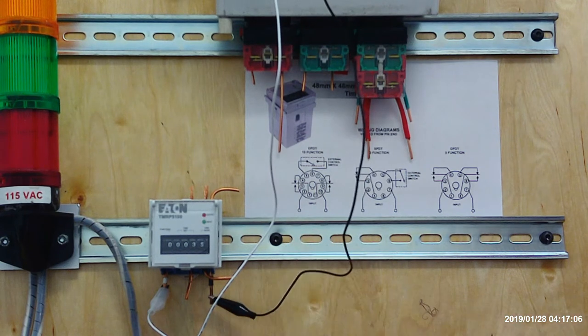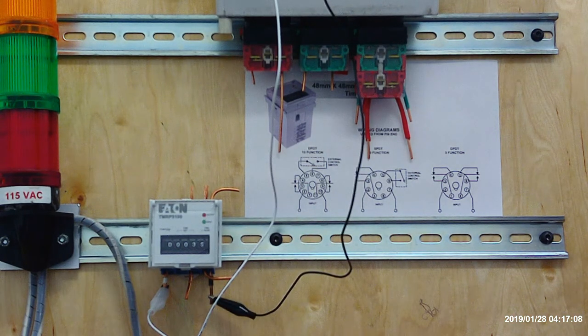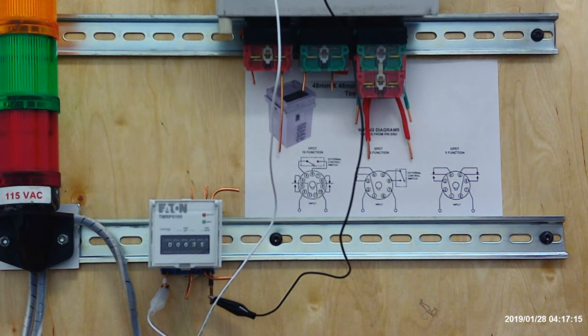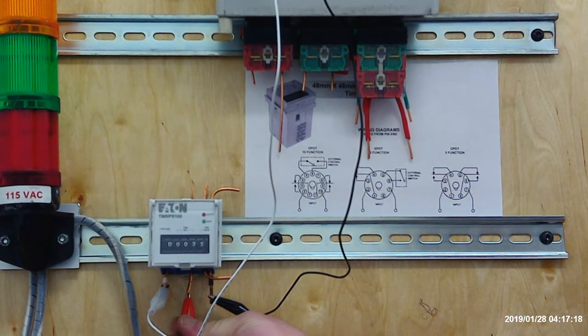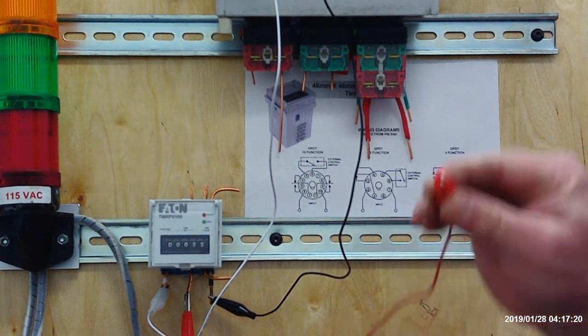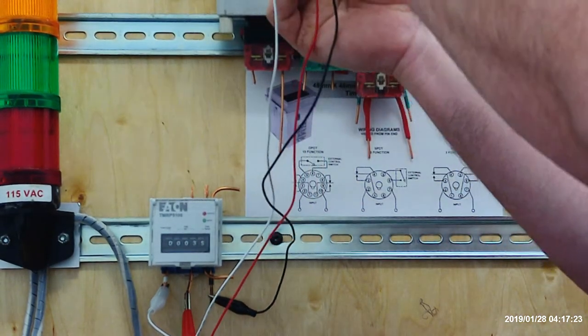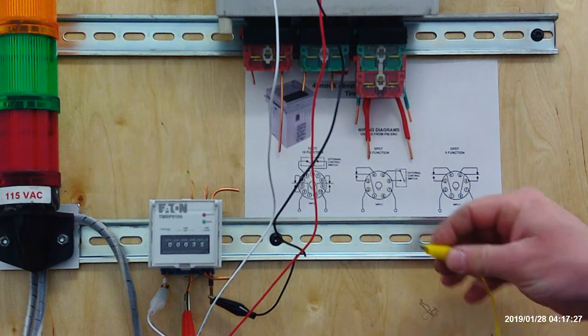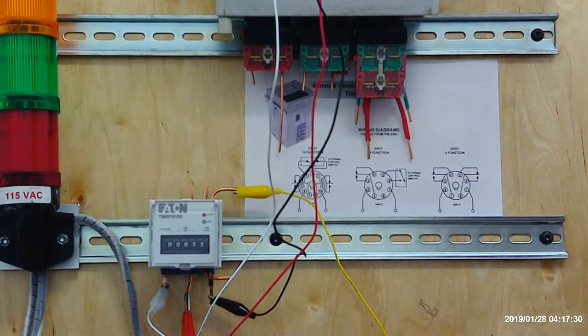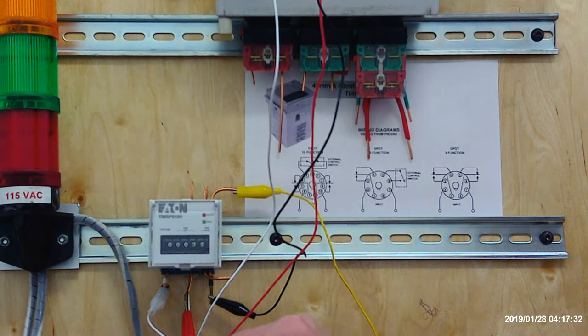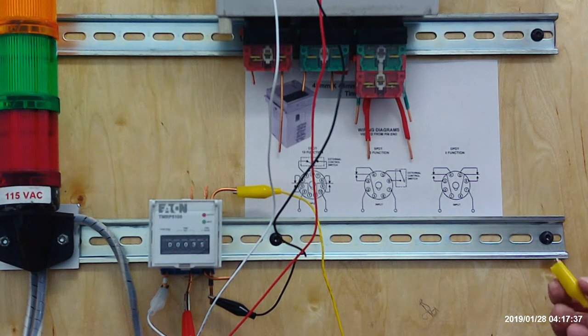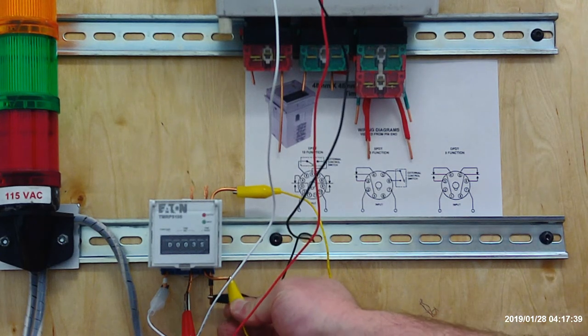I want to demonstrate the use of the contacts at the number one position. Take power into number one from a constant source of energy so you can see the lights. We're going to hook up the closed contacts to the red light and the open set of contacts to the green light.